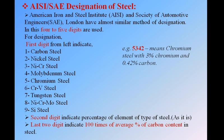The second digit indicates the percentage of the alloying element (type of steel). The last two digits combined indicate 100 times the average percentage of carbon content. For example, 5342: the first digit 5 means it is chromium steel, the second digit 3 indicates the chromium percentage, and the last two digits 42 divided by 100 gives 0.42% carbon.